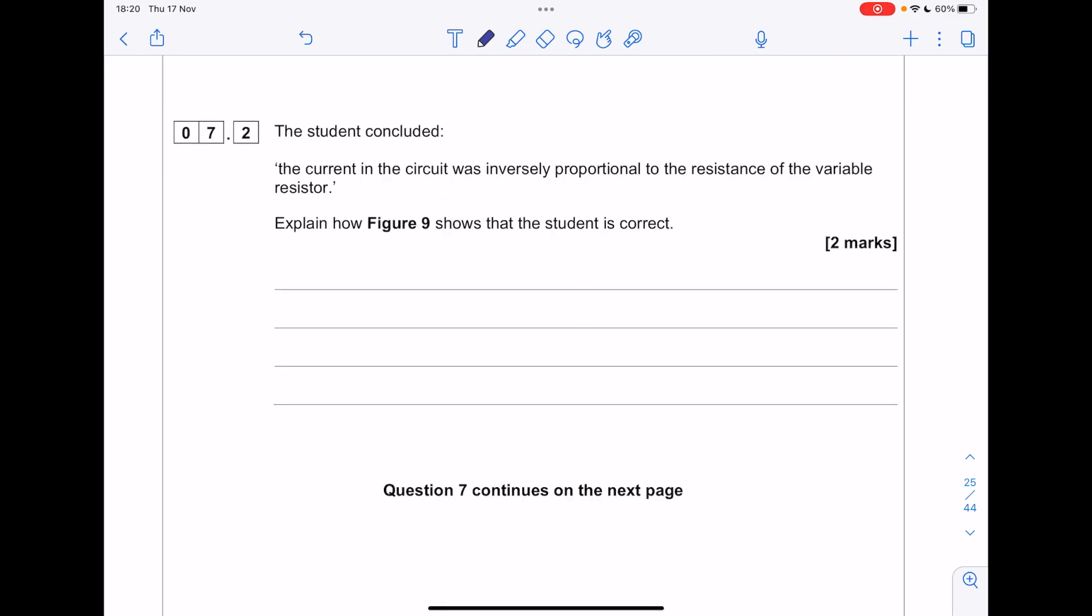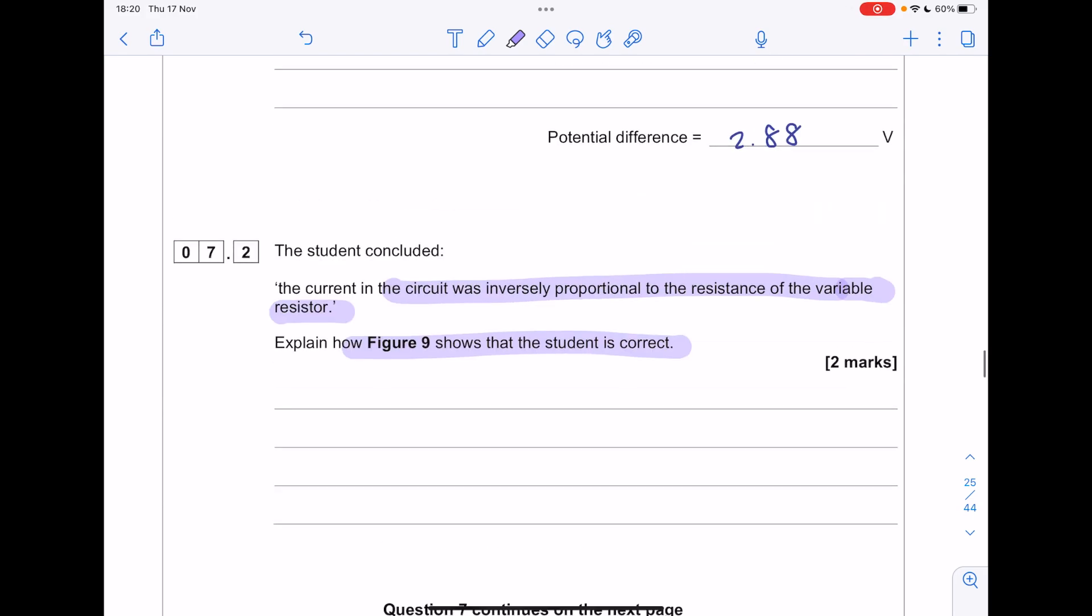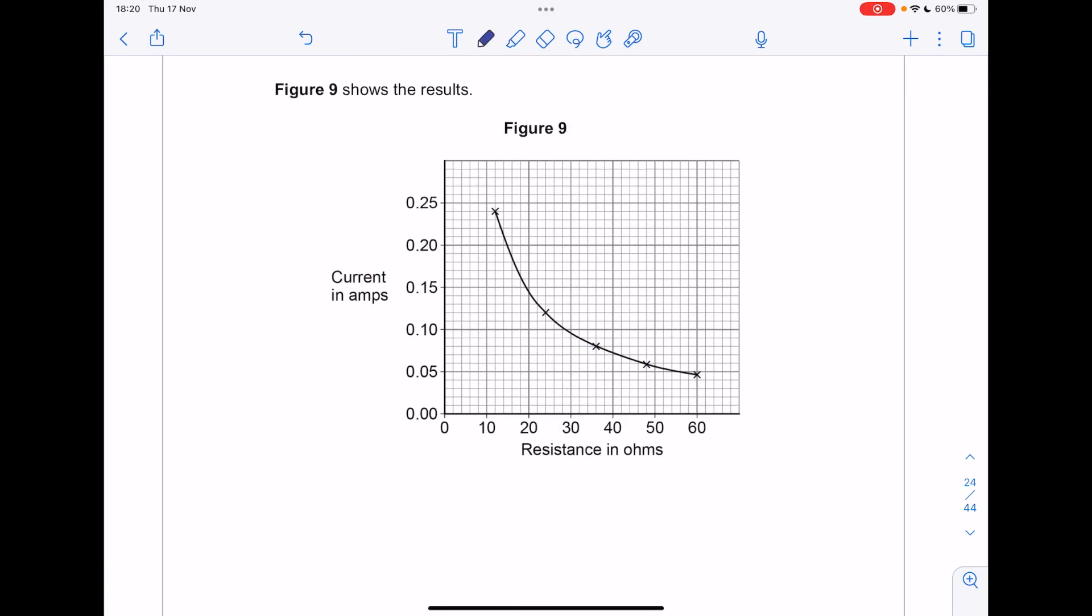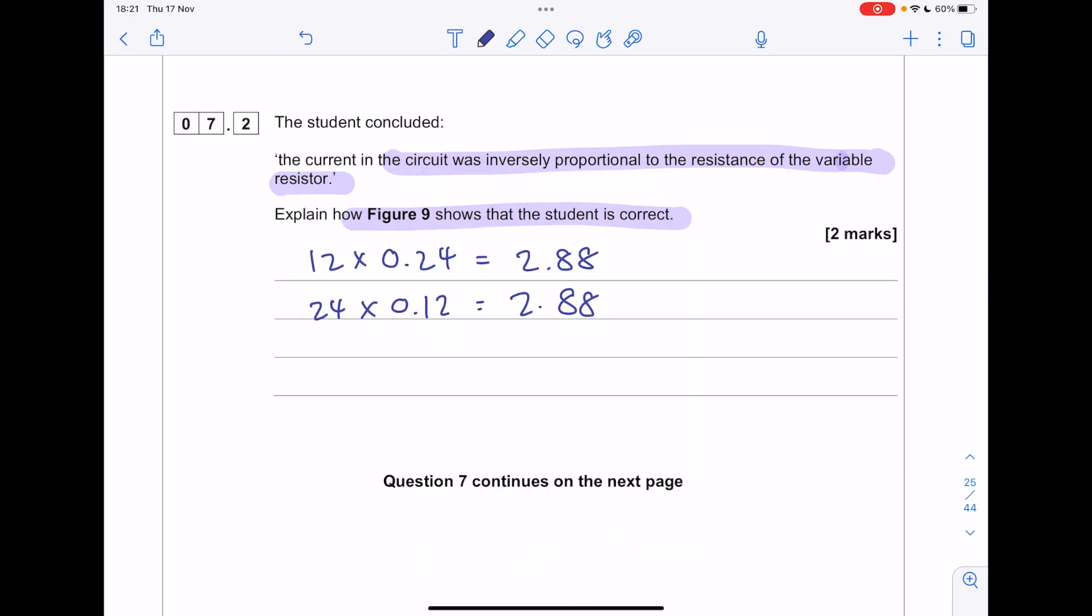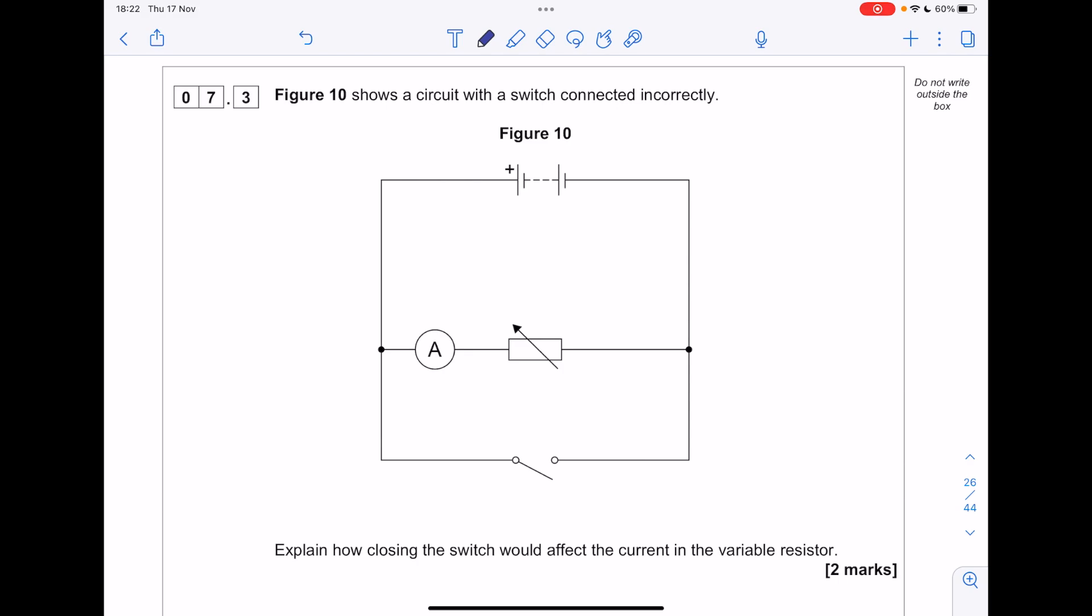The student concluded the current in the circuit was inversely proportional to the resistance of the variable resistor. Explain how figure 9 shows that the student is correct. If we were to multiply our current by resistance for two separate points here. Let's do 12 times by 0.24. And then compare it to this point, which is 24 times 0.12. Look, these values are the same. So what we write here is that the product or multiplying the current by the resistance produces a constant.